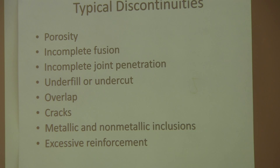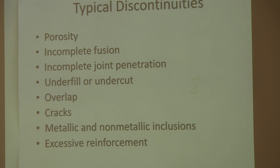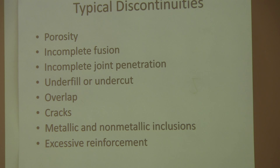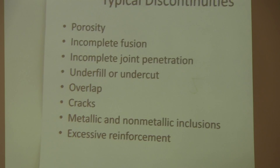When looking at surface quality, a weld inspector is only looking at surfaces — he's not actually using other NDT techniques, though he can request techniques like X-ray or ultrasonics. When doing his inspection, he's just looking at the surface. He's going to see things like porosity, incomplete fusion of the weld, incomplete joint penetration, underfill, undercut, overlap, cracks, inclusions, and excessive reinforcement.